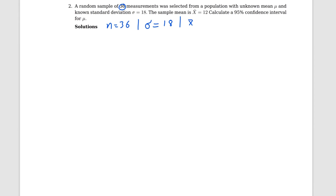And x-bar equals 12. So you see, we know sigma — sigma is known. If sigma is known, then you know the confidence interval formula: x-bar plus or minus z-star times sigma over root n. So that is the confidence interval.